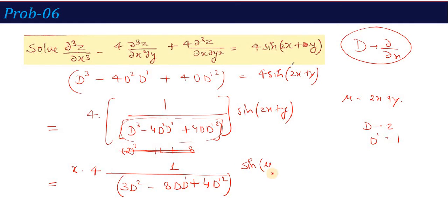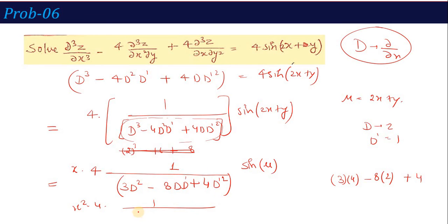Since the result is still 0, we multiply by x again (giving x²) and differentiate 3D² - 8DD' + 4D'² once more with respect to D, yielding 6D - 8D'. Substituting D=2, D'=1: 6(2) - 8(1) = 12 - 8 = 4, which is not zero. So now we proceed.